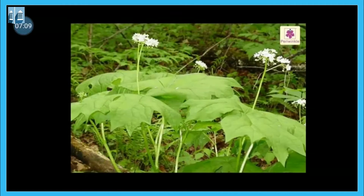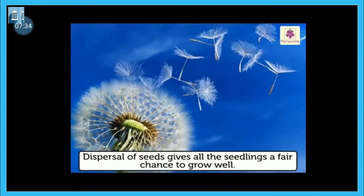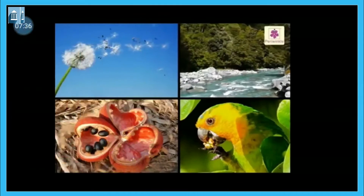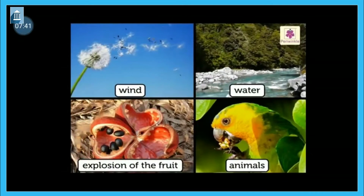Now let us understand what is seed dispersal. Seed dispersal means the process of moving of a seed from one place to another. Now, how can this happen? There are various agents of seed dispersal. For example, it can occur through wind, water, explosion of fruit, and animals.